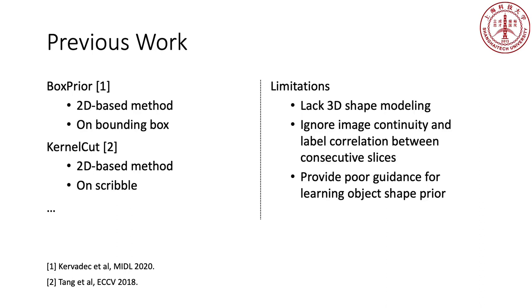Besides, existing weak labels such as box or scribble provide poor guidance for learning object shape prior.